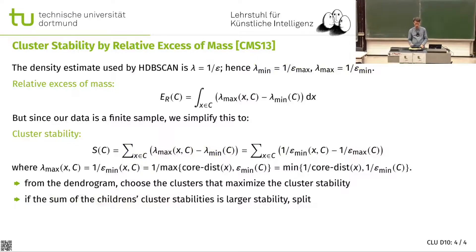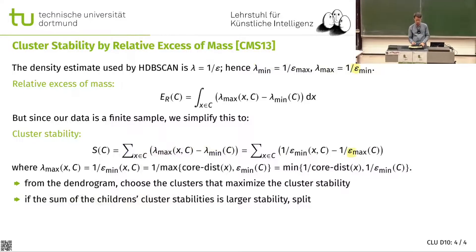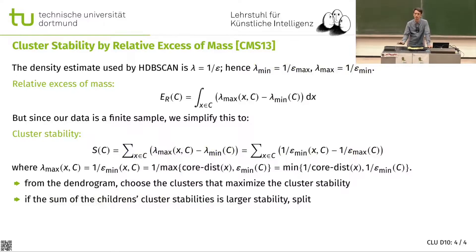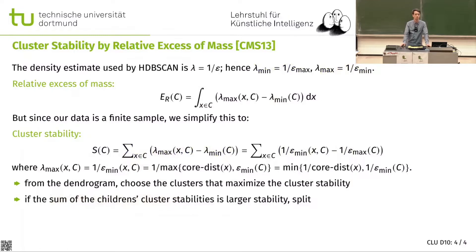This approach won't work on arbitrary dendrograms, because we use densities that we don't have with single-link, complete-link, or average-link clustering. That is the key idea of HDBSCAN*. HDBSCAN* is definitely the go-to method for density-based clustering nowadays. It revisited and improved key decisions from DBSCAN and OPTICS, solved them in a much nicer way, and we have a good implementation that gives comparable performance.